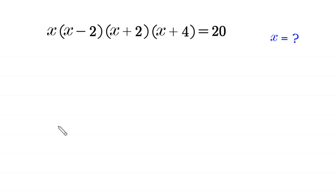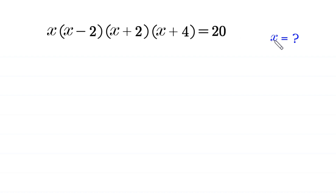Hello, welcome. We need to solve this very nice algebra equation: x times (x minus 2) times (x plus 2) times (x plus 4) equals 20. We need to find all possible values of x.